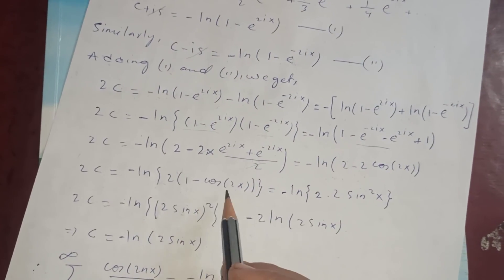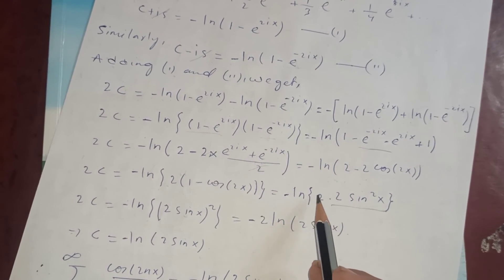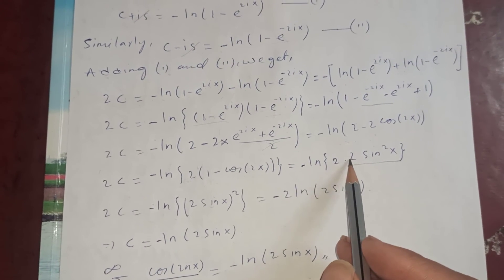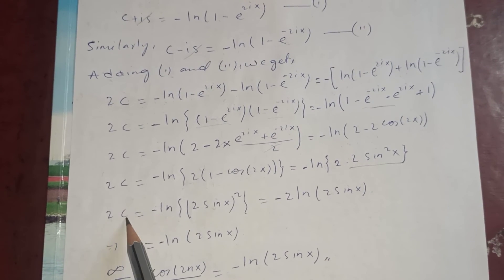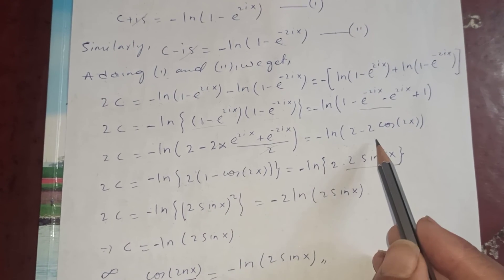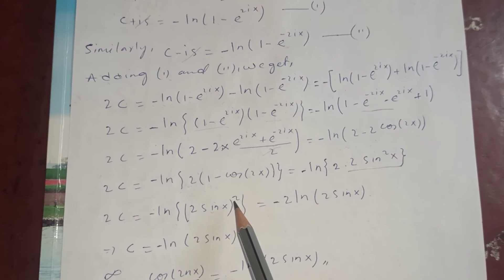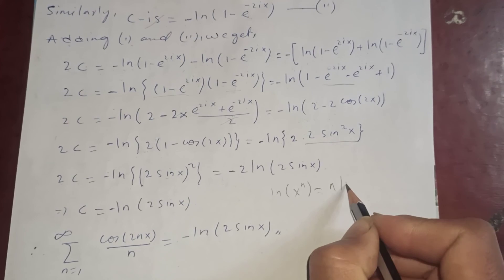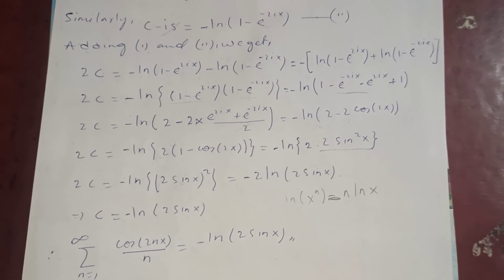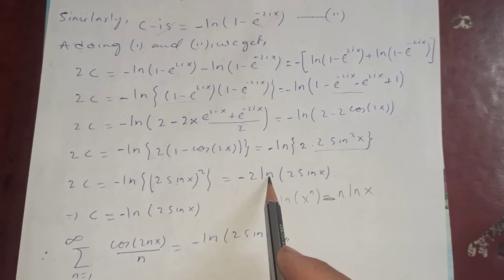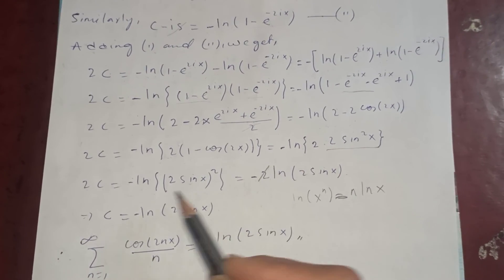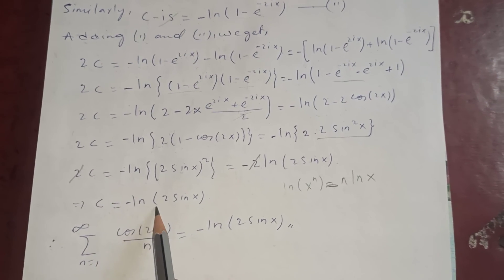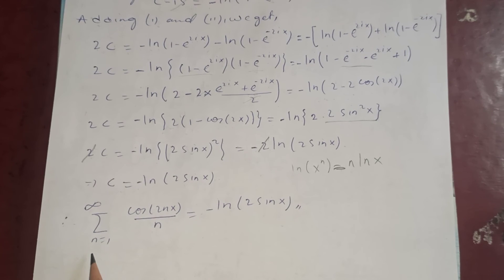So 2C equals minus log(4sin²(x)). Using the log property log(x^n) = n·log(x), this becomes minus log((2sin(x))²) = minus 2·log(2sin(x)). The 2 cancels on both sides, so C equals minus log(2sin(x)).